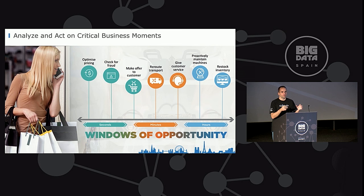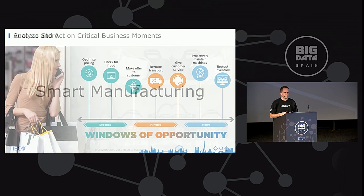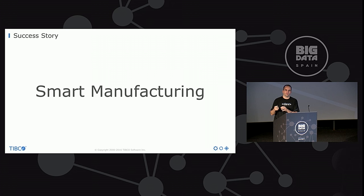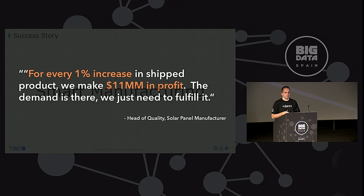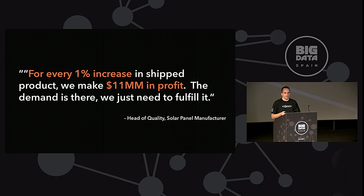There are different use cases across industries, like fraud detection for bank transactions, or making an offer to a customer before he leaves the store. Here it's really important to act in real time before he has left, because then he will go to another store and buy there. Or for longer-running processes like predictive maintenance — you have to continuously watch streams of events to decide if you want to replace a machine. I'll also use in the live demo the smart manufacturing use case, where for every 1% increase in shipped product the customer can make 11 million more in profit.